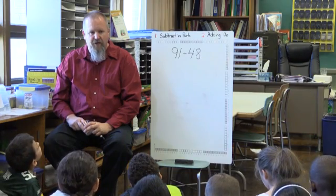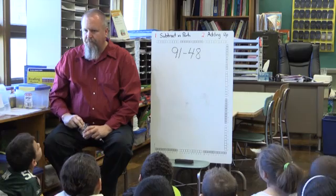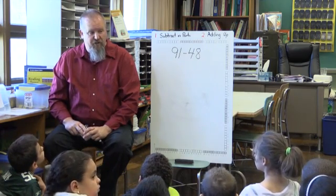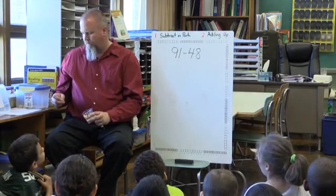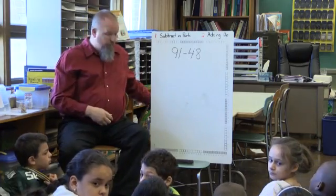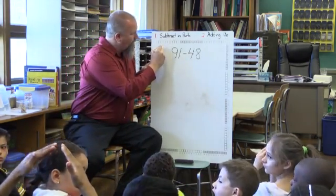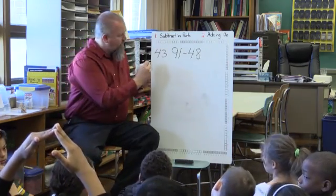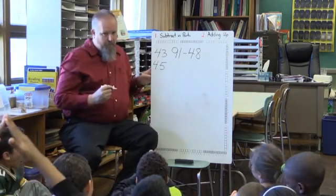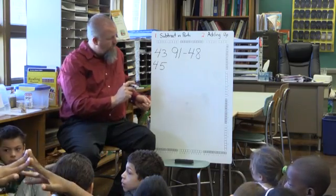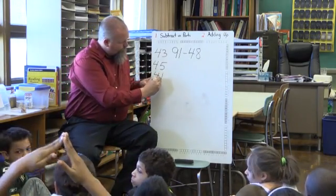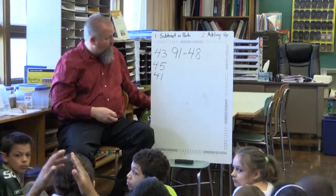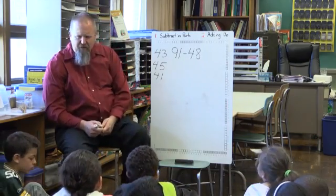Let's do one more — this one is gradually more difficult. Ariana Cobb, what answer did you get? 43 — a lot of people agree with that one. Isabella says 45. Ariana says 41. Natalie, which answer did you come up with? 43. Can you tell us how you got 43?